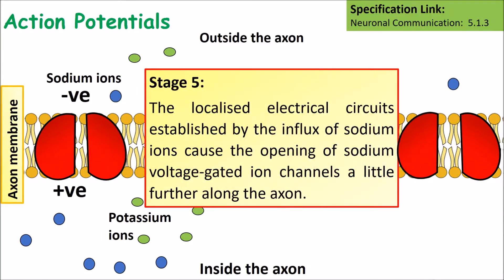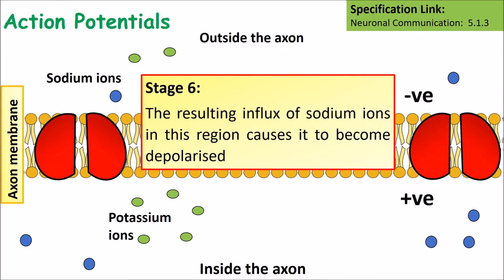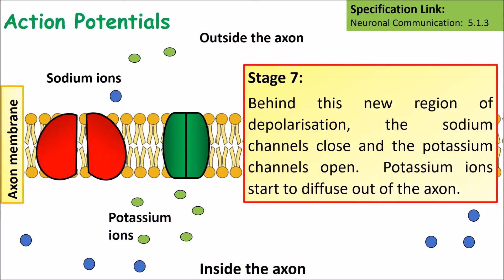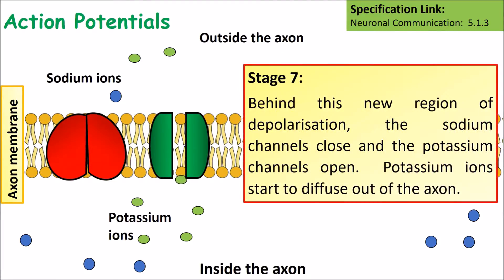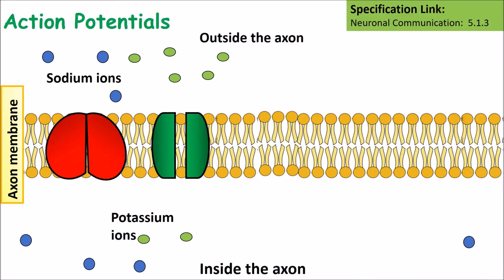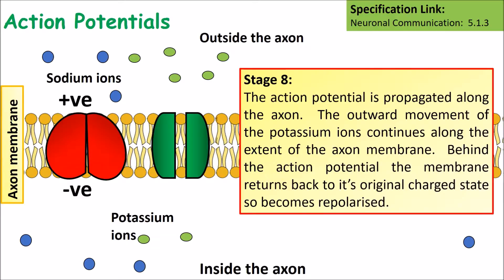The localized electrical circuits established by the influx of sodium ions cause the opening of sodium voltage-gated ion channels a little further along the axon. The resulting influx of sodium ions in this region causes it to become depolarized. Behind this new region of depolarization, the sodium channels close and the potassium channels open, and potassium ions start to diffuse out of the axon. The action potential is propagated along the axon, and the outward movement of potassium ions continues along the extent of the axon behind the membrane. Behind the action potential, the membrane returns back to its original charge state and becomes repolarized.